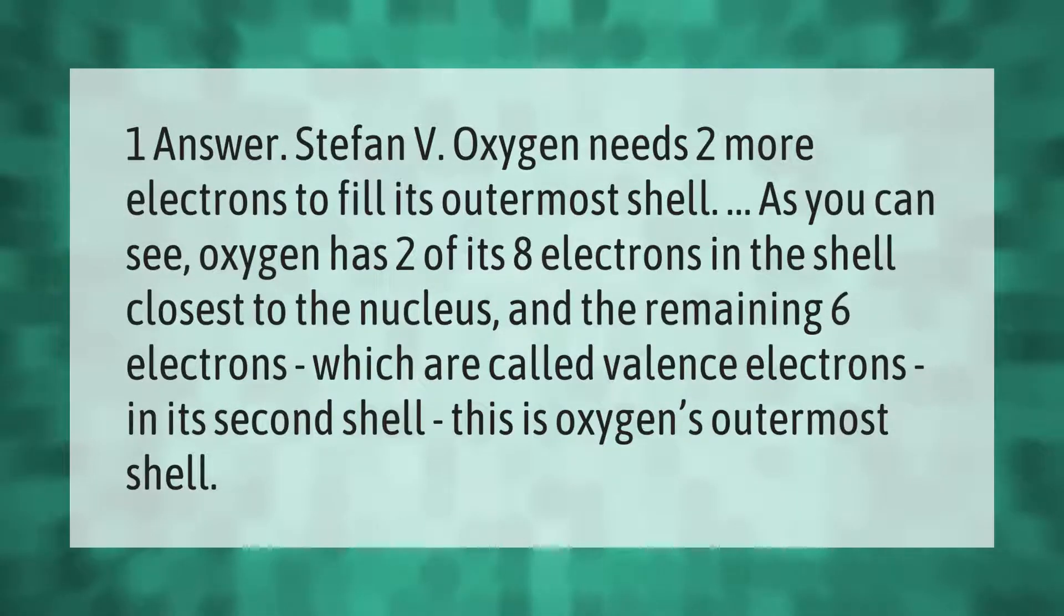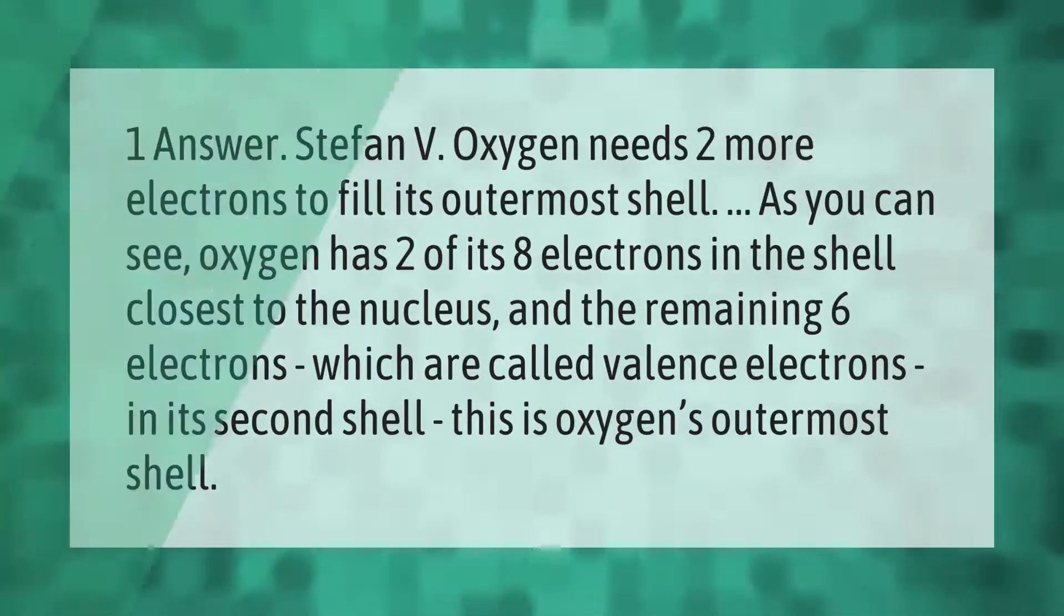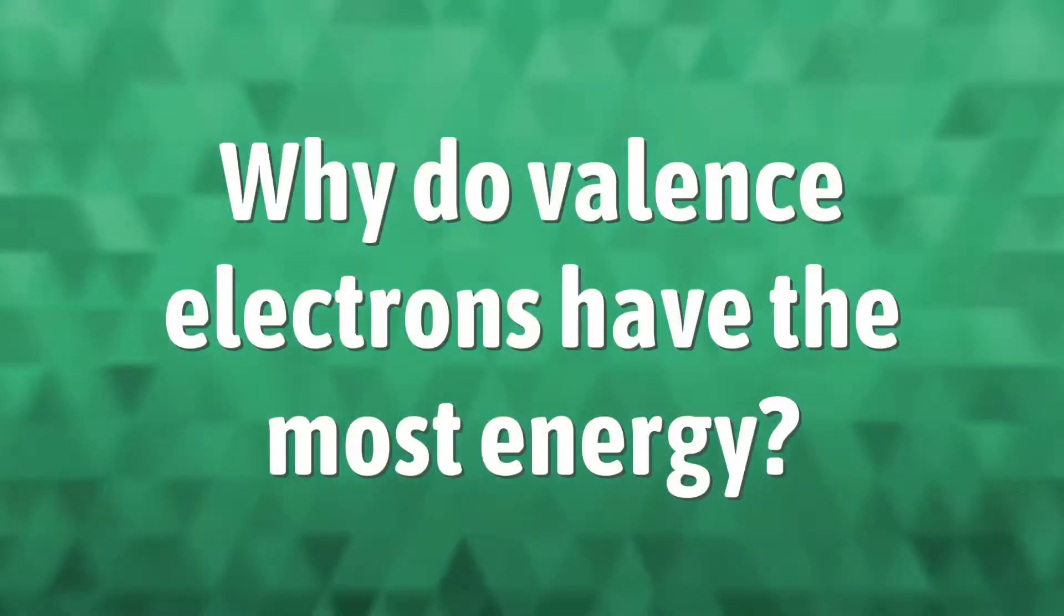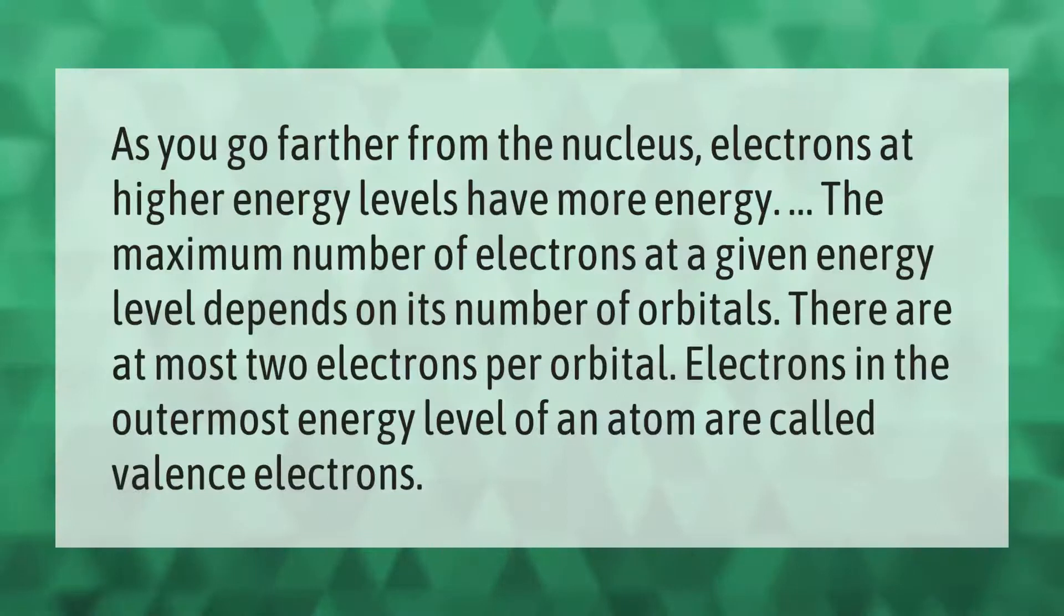Answer: Stefan V. Oxygen needs two more electrons to fill its outermost shell. As you can see, oxygen has two of its eight electrons in the shell closest to the nucleus, and the remaining six electrons, which are called valence electrons, in its second shell. This is oxygen's outermost shell.